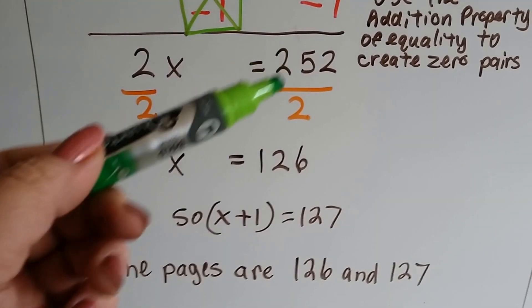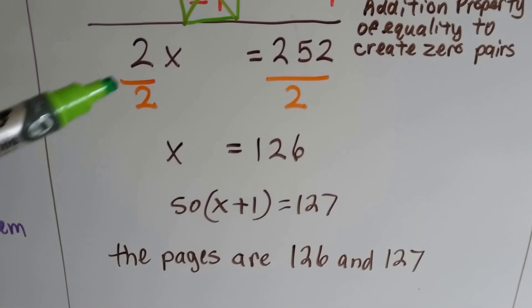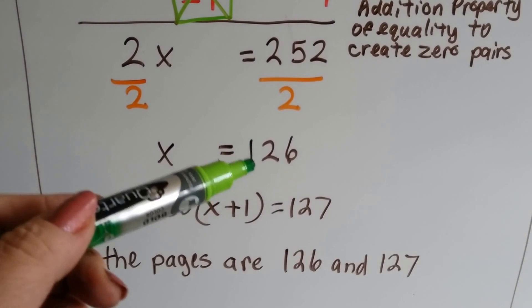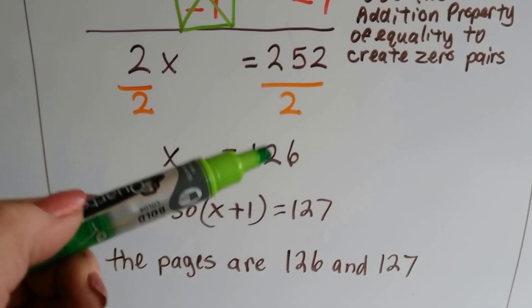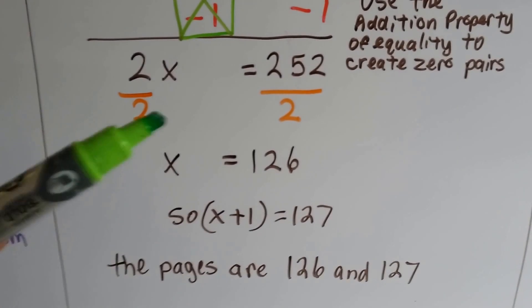So we do 2 divided by 2 and 252 divided by 2. And we find out that x is equal to 126. 252 divided by 2 is 126. Now we're not done.